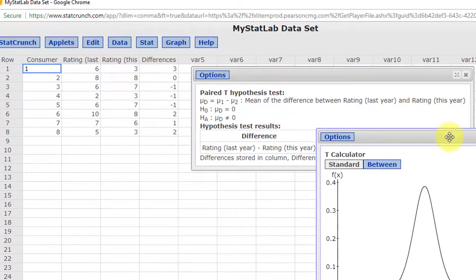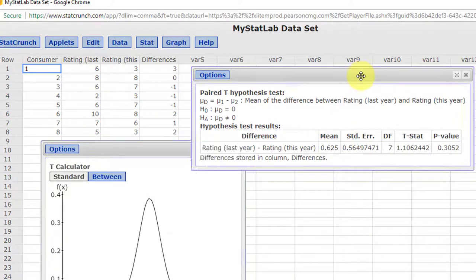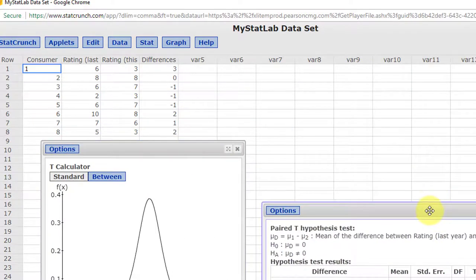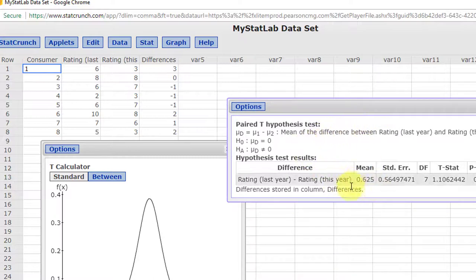Okay, so we want to get the mean, the D bar, the output from the T test will give us that, which is this mean here, the mean of the differences is 0.625.